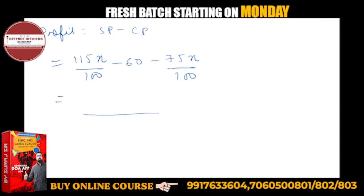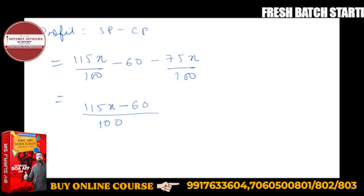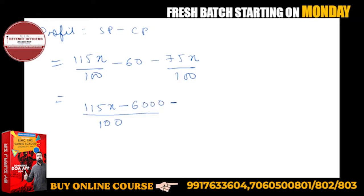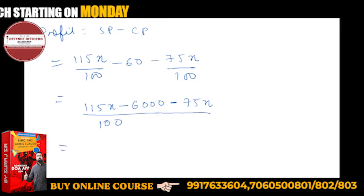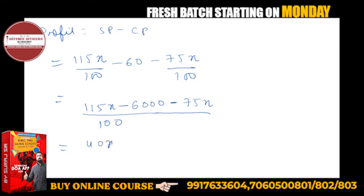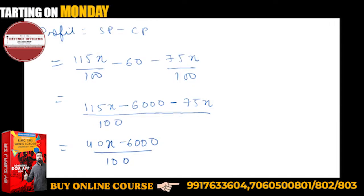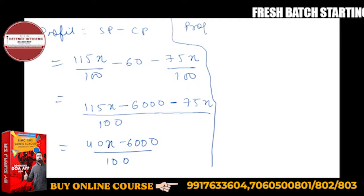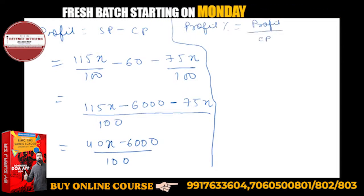75 plus 25 is 100, 25 and 15 give you 40. So 40x minus 6000 upon 100. This will be the profit.